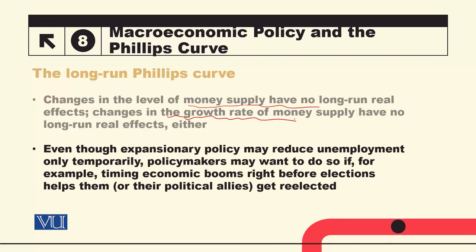Even though expansionary policy may reduce unemployment only temporarily, policymakers may want to do so — for example, if timing economic booms right before elections helps them or their political allies get re-elected. So in the short run, money supply could increase, inflation could increase, and unemployment could be reduced.